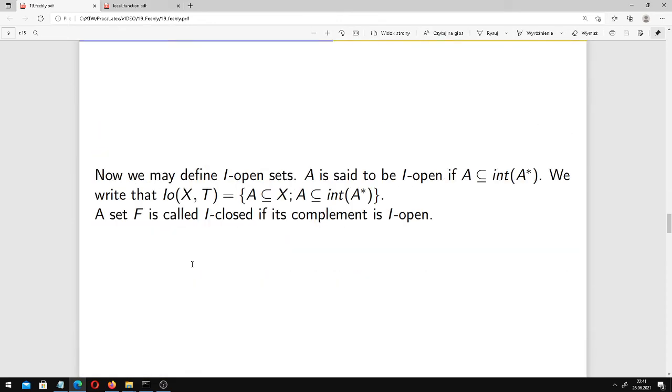We may also define so-called I-open sets, which depend on our ideal I. A is said to be I-open if A is contained in the interior of its local function, in the interior of A star. The set of all I-open sets is denoted by IO of XT. And of course, we may also consider I-closed sets, which are just complements of I-open sets.